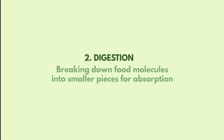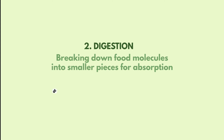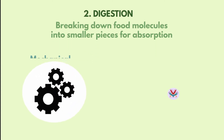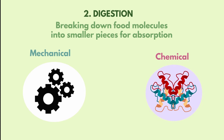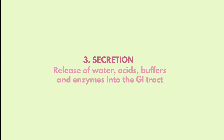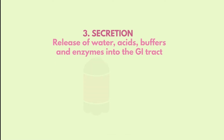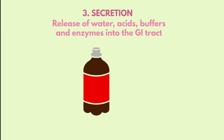The second process, which will start in the mouth, is digestion — the process of breaking down food molecules into smaller forms for absorption. There are mechanical and chemical digestion types. The third process, also starting in the mouth, is secretion, which is the release of water, acids, buffers, and enzymes into the GI tract. Altogether, a total of 7 liters of fluid is secreted into the GI tract per day.